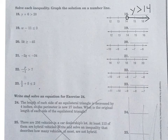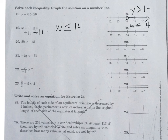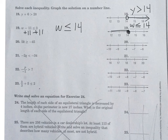For number 19, add 11 to both sides, and w is less than or equal to 14. To graph it, put a closed circle on 14. Since w is less than or equal to 14, the arrow points to the left toward the smaller numbers.